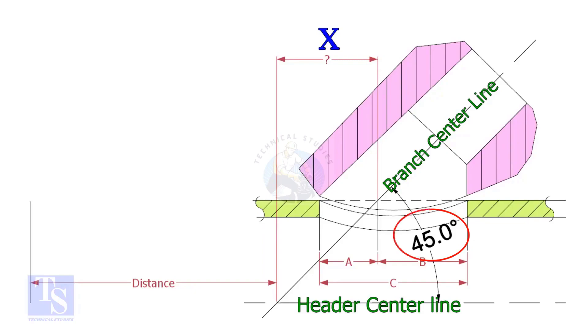If the including angle is 45 degree, the value of x will be always half OD of the header. Suppose the OD of the header is 400 millimeters, then the value of x will be 200 millimeters.